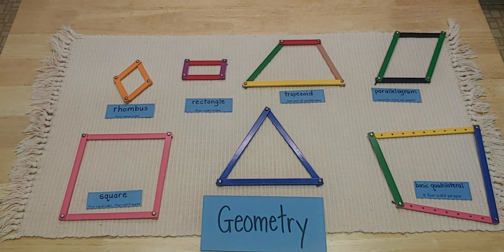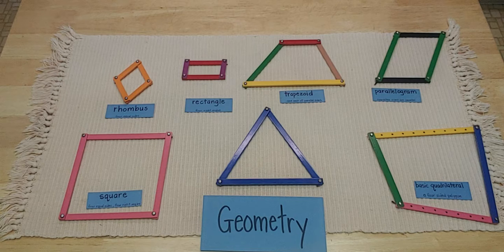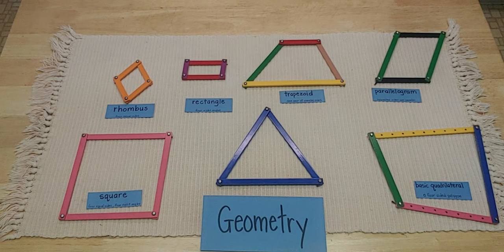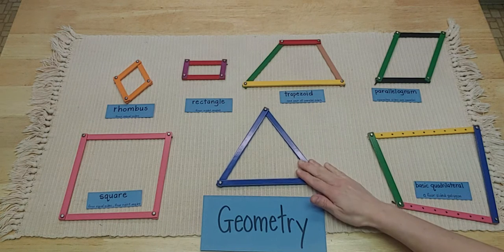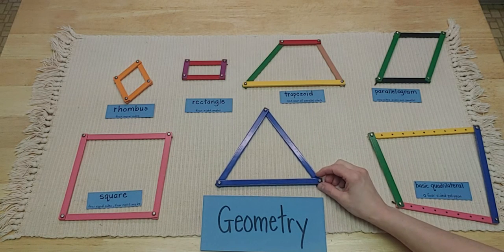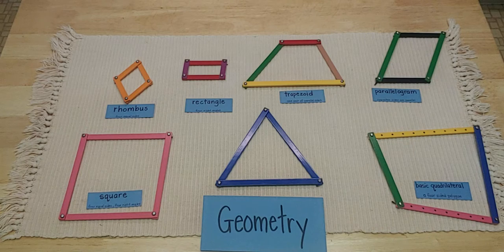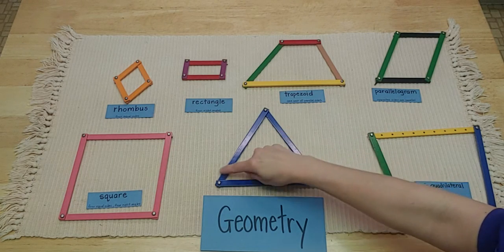Hi, welcome back to our next geometry lesson. Last time that we met with each other we talked about triangles. Now remember, triangles are polygons or shapes that have three or more sides. They have straight lines that are connected.